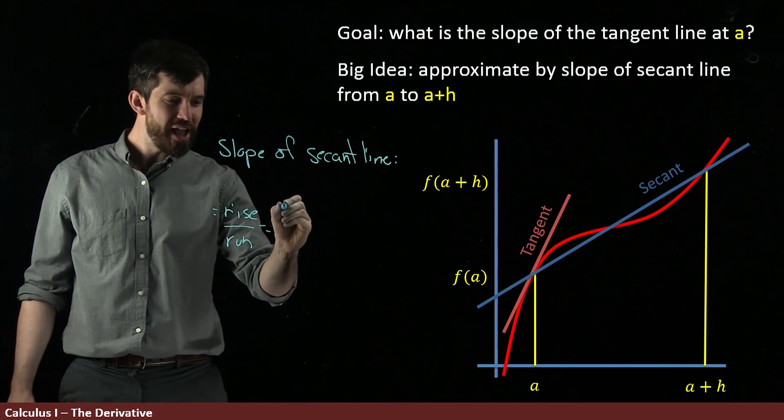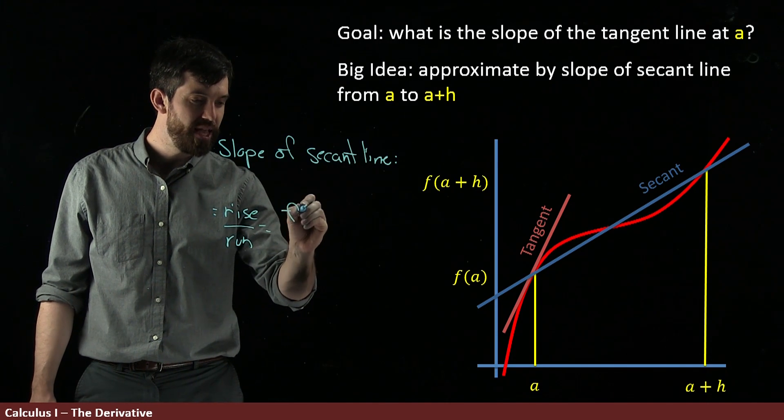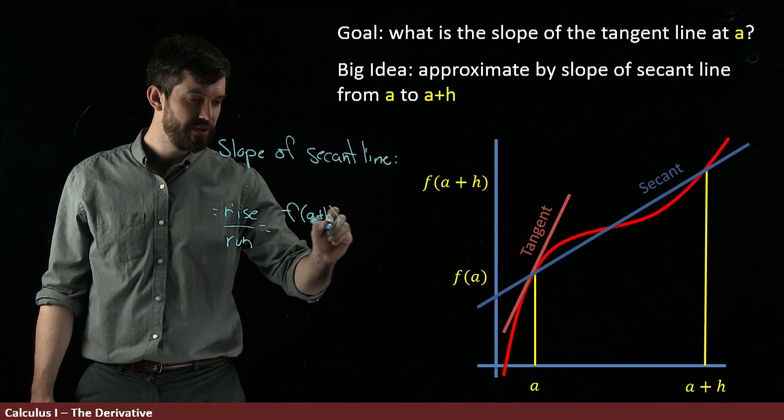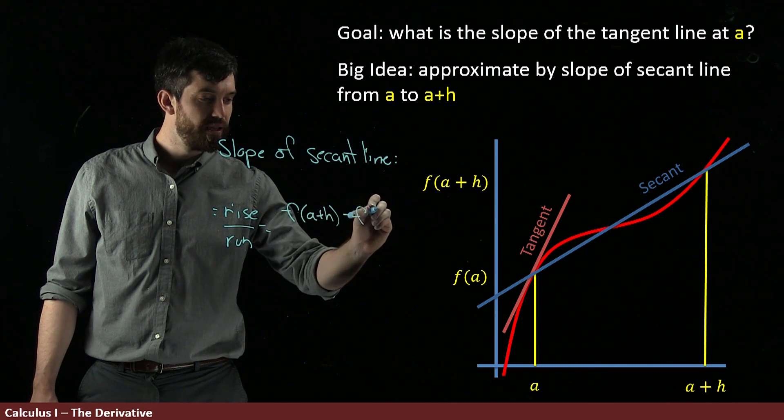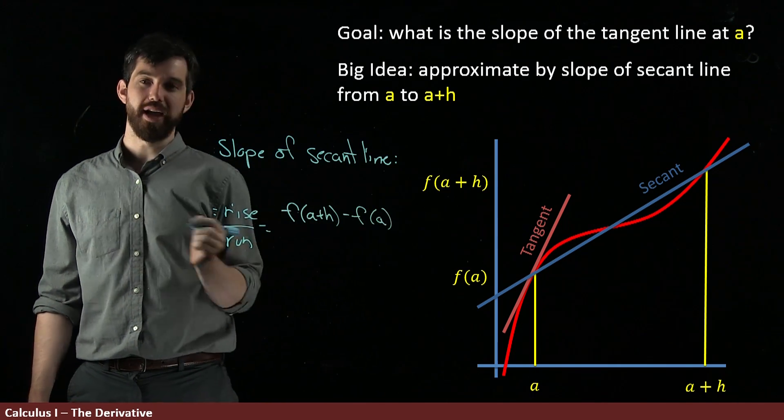And so I'm going to claim that my rise here is this difference. It's going to be f of a plus h minus f of a. So that's my rise. Okay, what about my run?